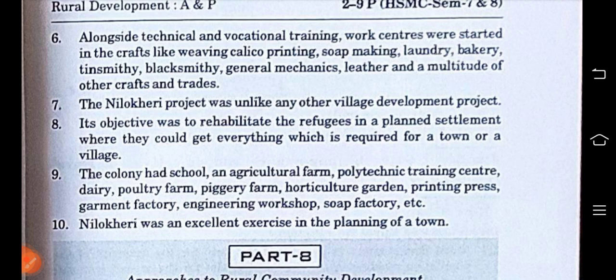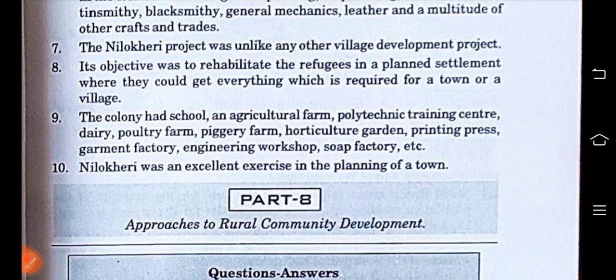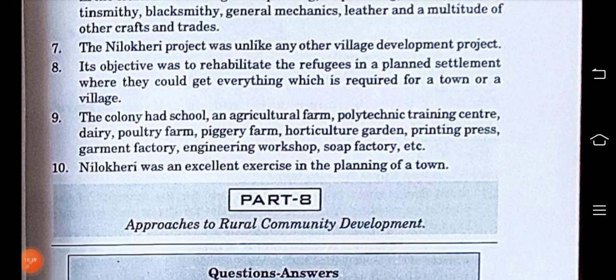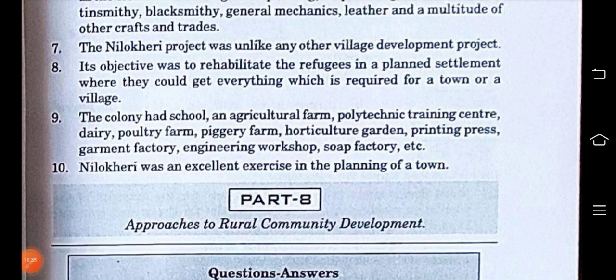The ninth point says the colony had a school, an agricultural farm, a polytechnic training center, dairy, poultry farm, piggery farm, horticulture garden, printing press, garment factory, and engineering workshop. So within the planned colony, all these areas were identified where focus was needed. The tenth point states that Nilokheri was an excellent exercise in the planning of a town.